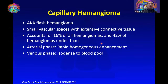On the opposite end of the spectrum is the capillary hemangioma, also called flash-filling hemangioma. These have small vascular spaces with extensive connective tissue, accounting for 16% of all hemangiomas but 42% of small hemangiomas less than one centimeter. On arterial phase there is rapid homogeneous enhancement, and on venous phase they become isodense to the blood pool.